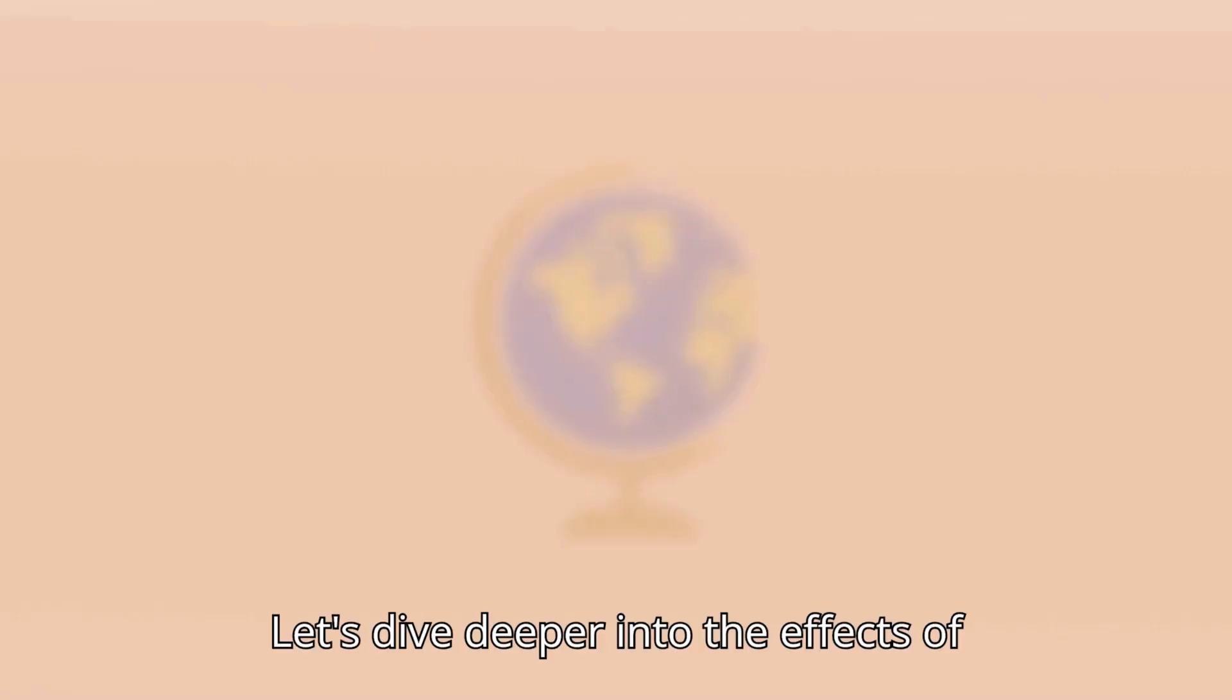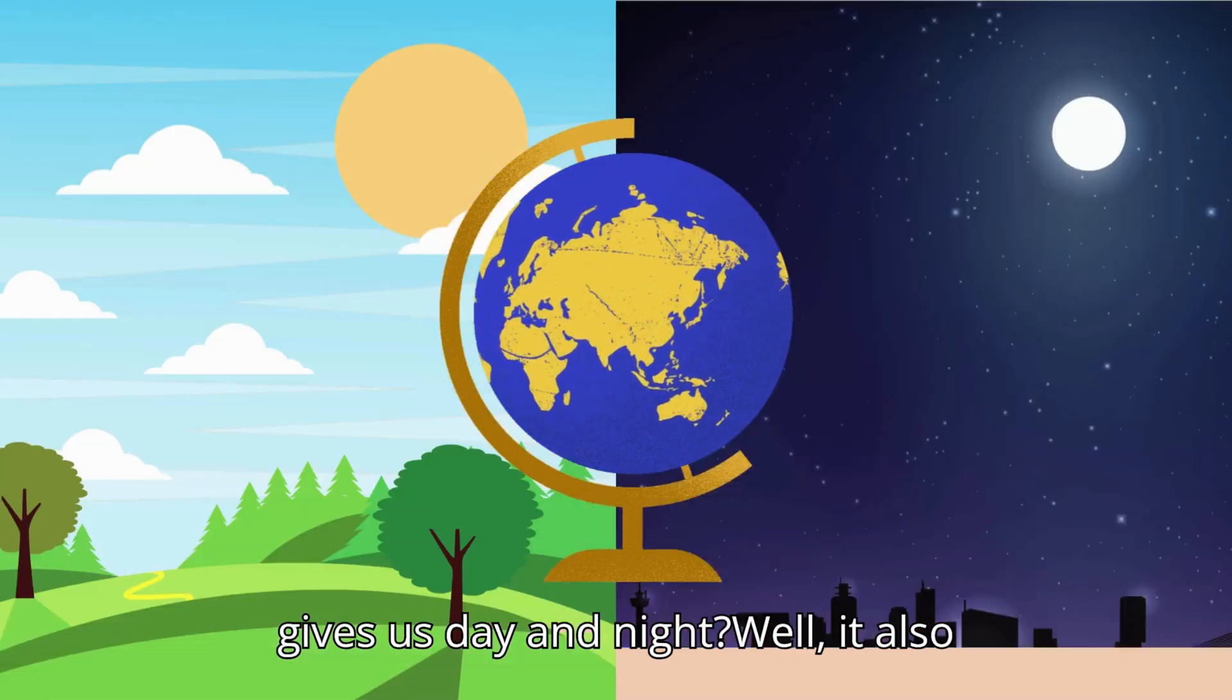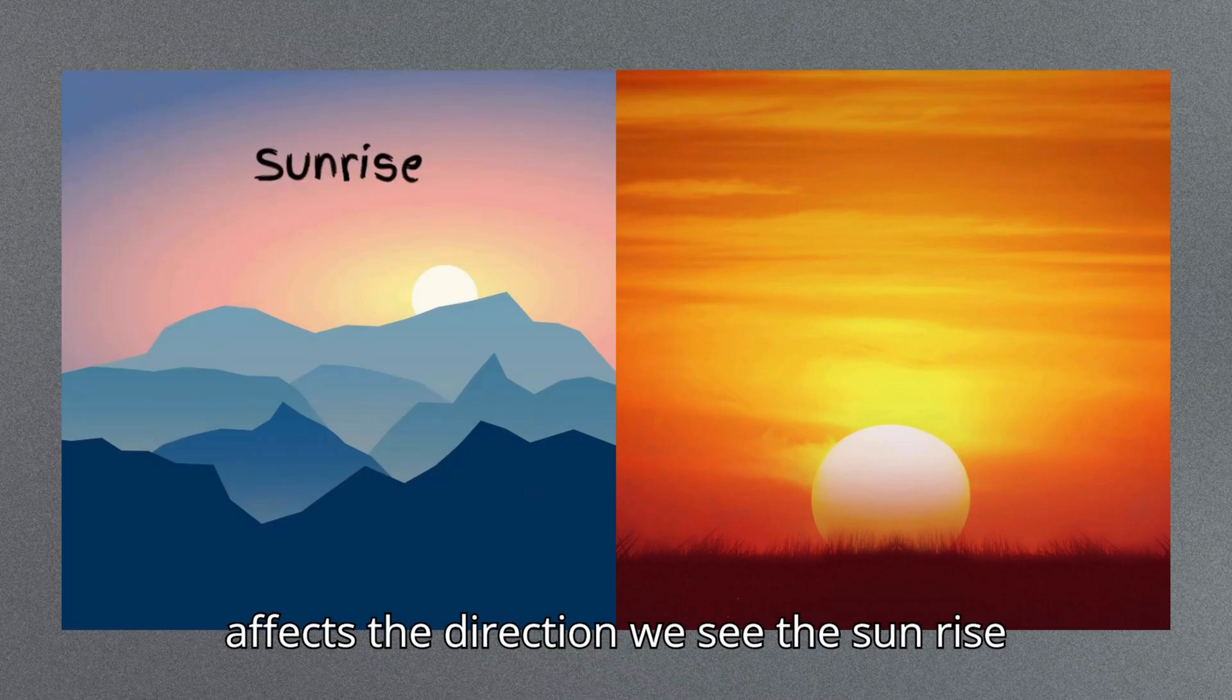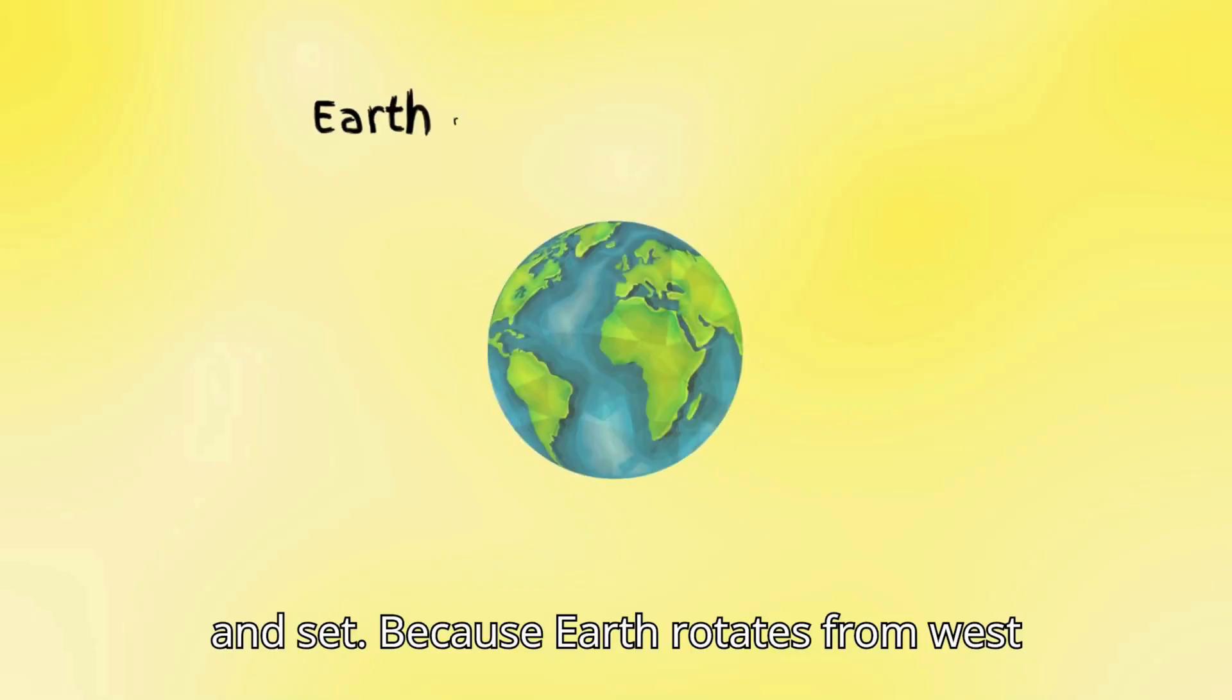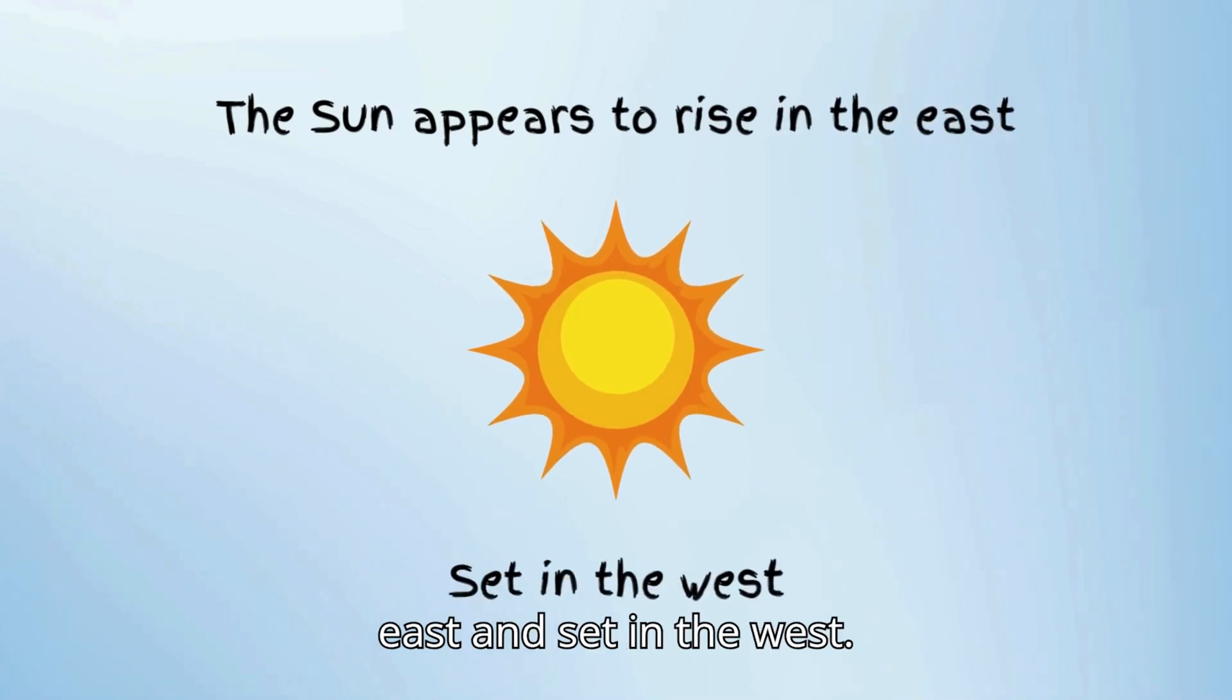Let's dive deeper into the effects of Earth's rotation. Remember how rotation gives us day and night? Well, it also affects the direction we see the sunrise and set. Because Earth rotates from west to east, the sun appears to rise in the east and set in the west.